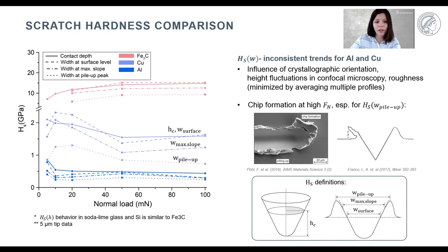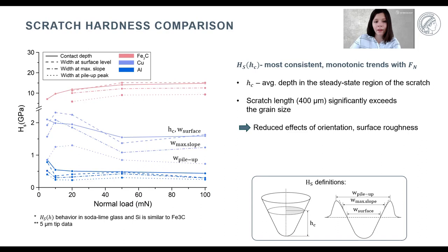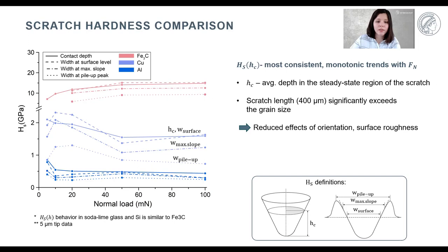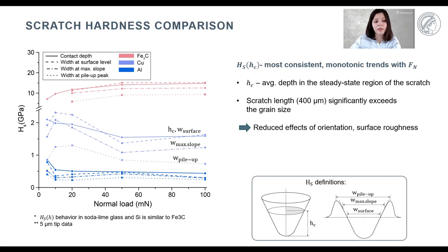We actually observe this for copper and aluminum. The same factors that influence the scratch width, such as individual grain orientation and surface roughness, affect contact depth in a very similar way. However, these factors are reduced more strongly because the contact depth was determined as the average depth in the steady-state region of the scratch, and the overall scratch length significantly exceeds the grain size. As a result, the hardness based on contact depth shows the most consistent behavior among all investigated methods, and we will focus on discussing mainly the scratch hardness based on contact depth.